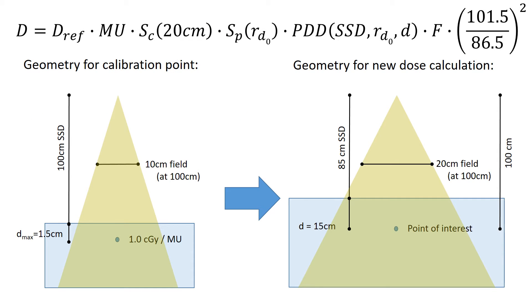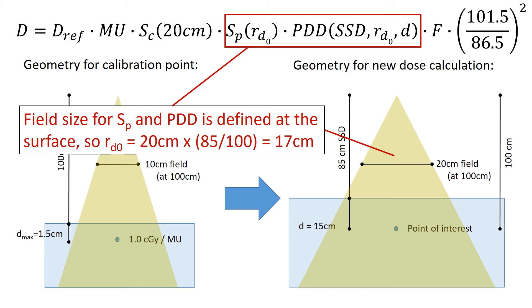Let's look at the field size for the phantom scatter factor and the PDD. So normally, when you use the PDD method, the source-to-surface distance is unchanged. We're always looking at 100 cm. But that's not the case here. Here we have the surface moving closer to 85 cm. And so because of that, the projected field size on the surface has decreased. So we actually have to account for that.